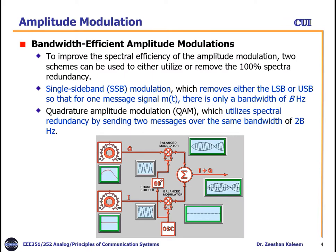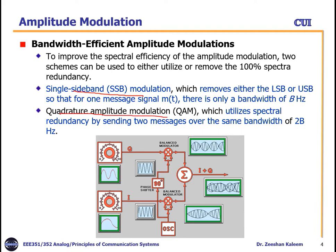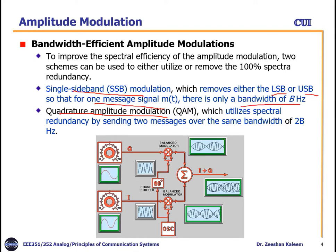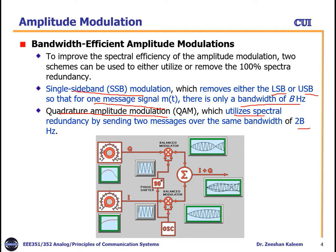In literature there are two types of bandwidth-efficient modulation schemes. One is single sideband modulation, which either removes the lower sideband or upper sideband so that for one message signal there is only a bandwidth of B hertz. The other is quadrature amplitude modulation (QAM), which utilizes the same 2B bandwidth but transmits two different messages over it.